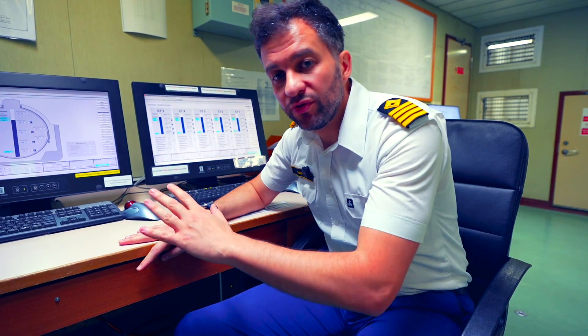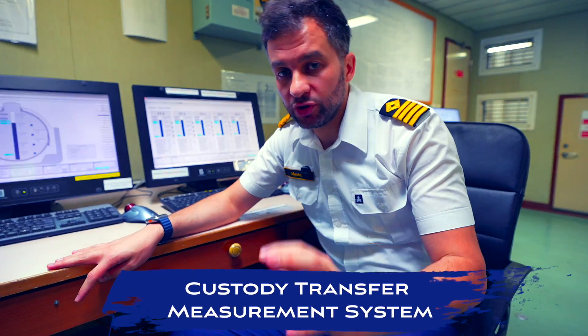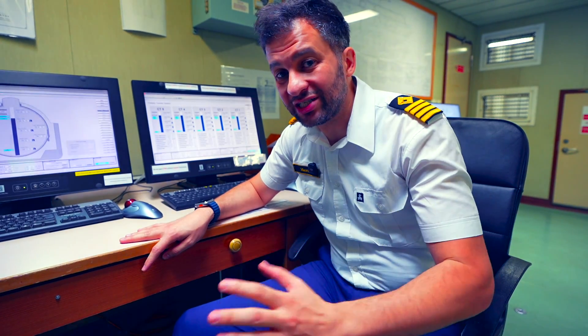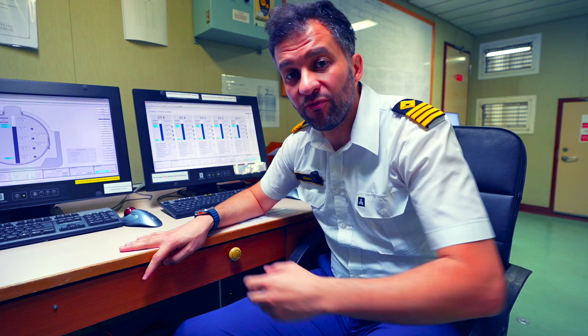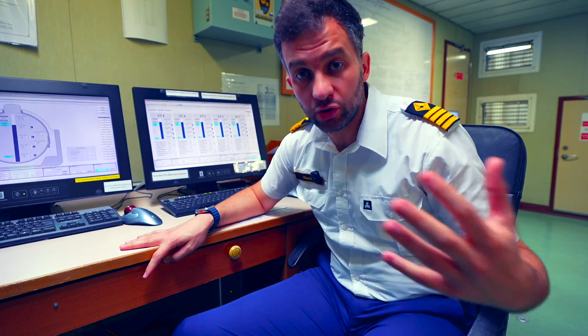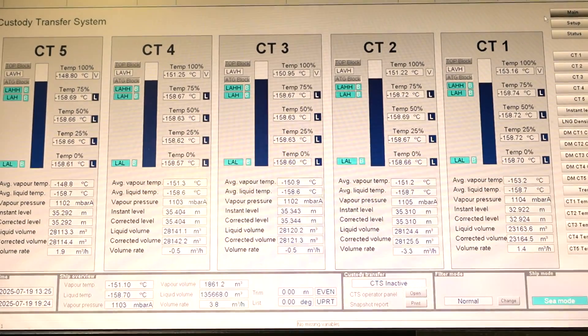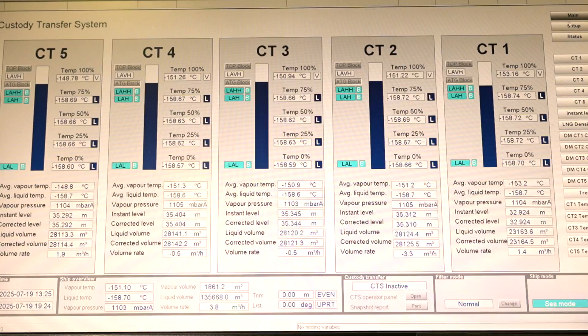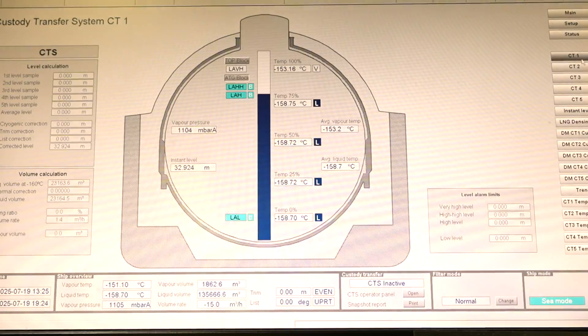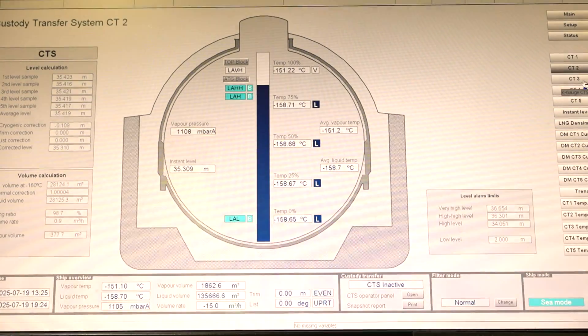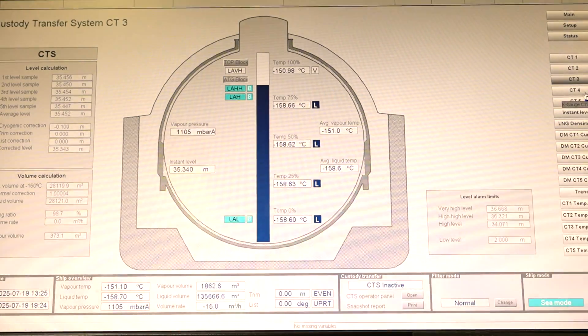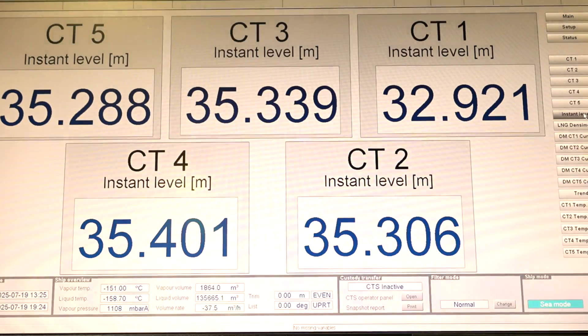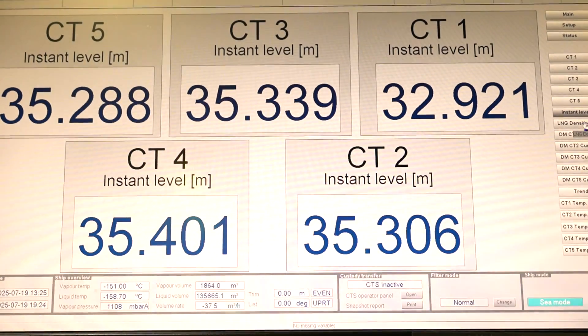These two screens is the CTMS, custody transfer measurement system. Here where the LNG cargo quantity loaded or discharged is calculated. Even the terminal will rely on this system for the figures and for the quantity transferred. All the cargo tank sensors for level, pressure, temperature are fed to the system, even the trim and list for accurate measurements of the cargo quantity on board. The system calculates the quantity before loading or discharge then calculates it again after completion. The difference between the two quantities is the quantity transferred.